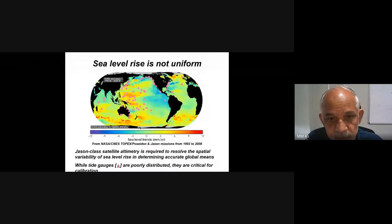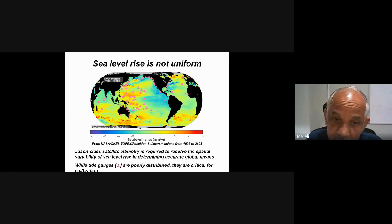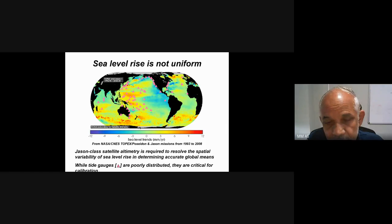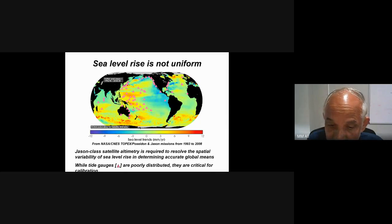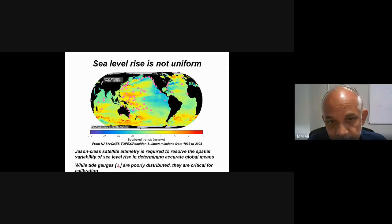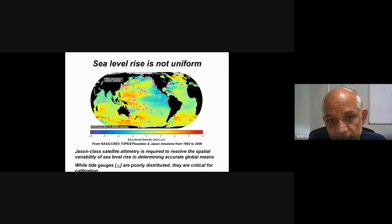Sea level rise is not uniform — it is decreasing in some places too. There are two reasons. First, the dynamic factor of the oceans: El Niño causes sea level rise at some places, while La Niña causes decreases. Second, changes in gravity — when gravity is stronger, water is pulled down and sea level goes down. Because of these dynamic and gravitational factors, sea level rise is not uniform throughout the globe.